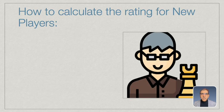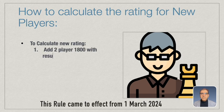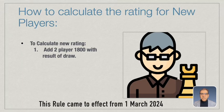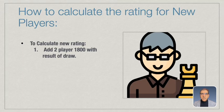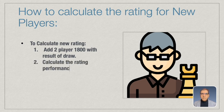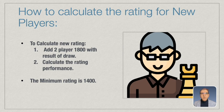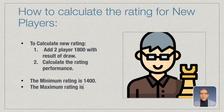For calculation, according to the laws from 1st March 2024, we add two hypothetical players with a rating of 1800 and draw results to the game collection. We then calculate the rating performance. If the player achieves a rating of 1400 or above, it will be published; otherwise it is ignored. If the calculated rating is 2200 or above, it will be published only as 2200.